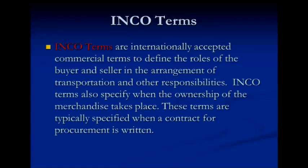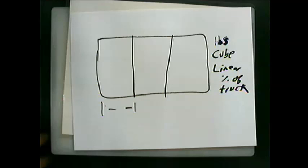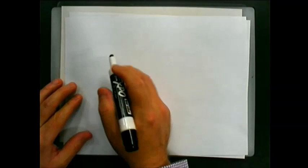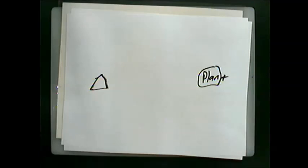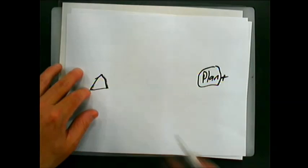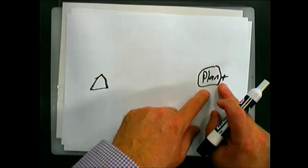The important concept is the incoterm. An incoterm is an internationally accepted commercial term that defines the roles of the buyer and seller in the arrangement for transportation and responsibilities. Incoterms specify when ownership of merchandise takes place and are typically provided in the contract for procurement. So if I'm moving parts internationally — buying seats from China or metal parts from India — where does transfer of ownership occur? It could occur at the supplier or next to my plant. Incoterms specify that.